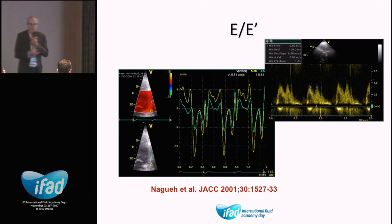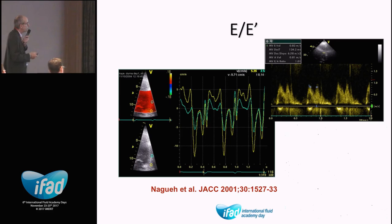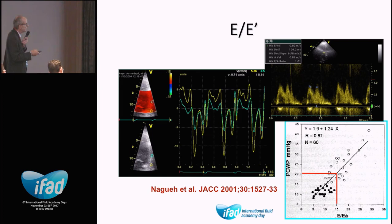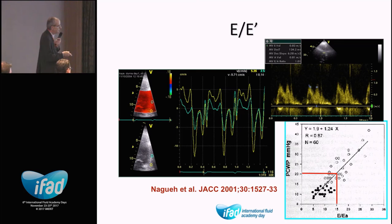E/E' has been shown as an indicator of left ventricular filling. You measure the E velocity at the mitral valve and the E' velocity at the mitral annulus with tissue Doppler. Dividing E by E' provides an estimate of filling pressures: a capillary wedge pressure of 20 mmHg correlates with an E/E' of approximately 15.